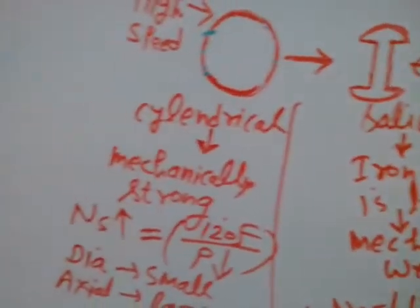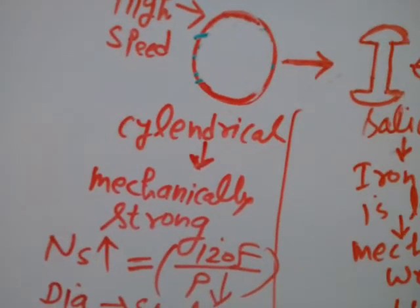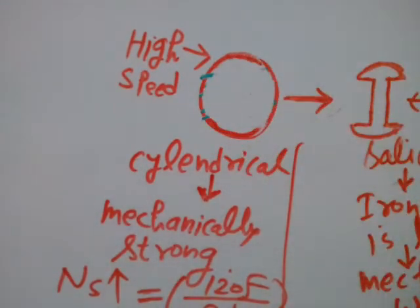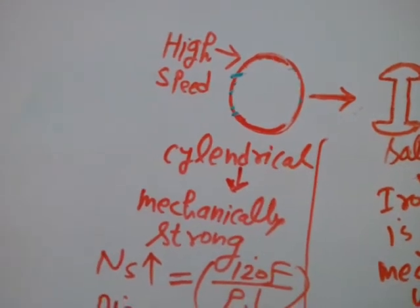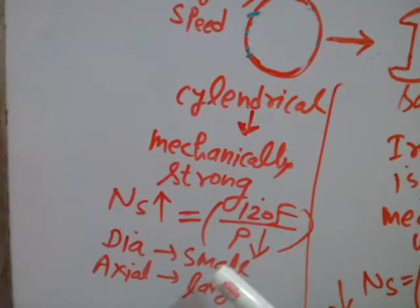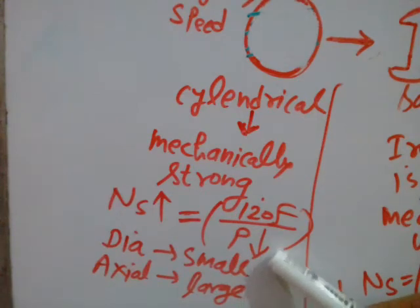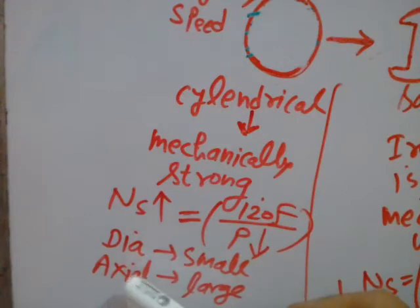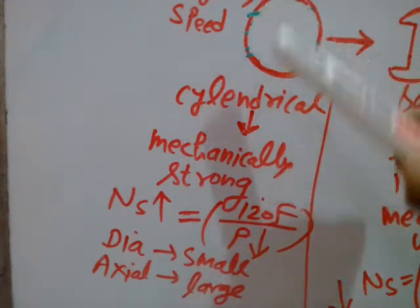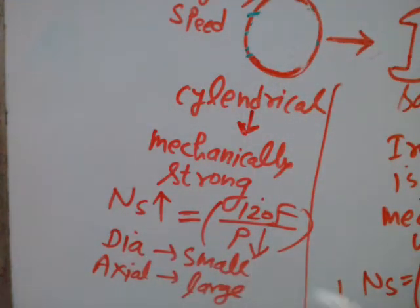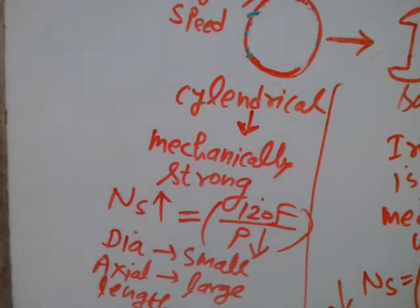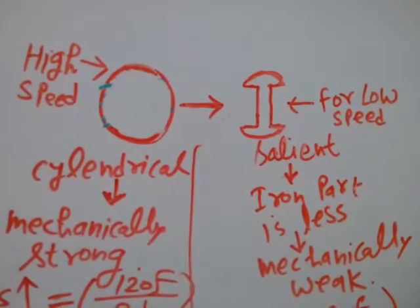Conversely, the cylindrical rotor is always used for high speed because its structure is mechanically strong, so it can be used for high speed applications. The number of poles will be less because speed and poles are inversely proportional. You have to accommodate a small number of poles on the periphery, so the diameter would definitely be small. When the diameter is small, the axial length must be large.